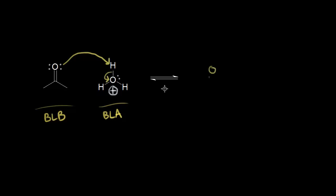Let's show the result of our acid-base mechanism. On the left, the lone pair on the left of the oxygen didn't do anything. The lone pair on the right of the oxygen picked up a proton, formed a bond, and so we get this with a plus one formal charge on the oxygen. We would also form water here — H2O — let me draw that in and show our lone pairs of electrons.